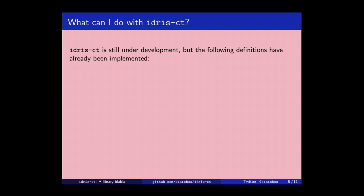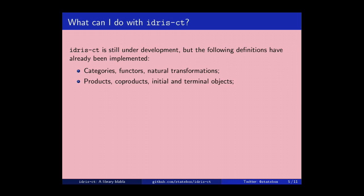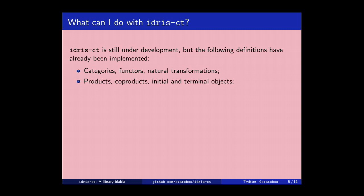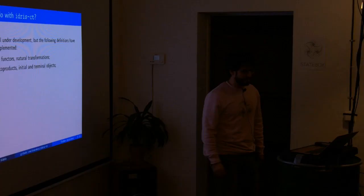So what can you do with this thing? Well, we got quite far. We implemented the basic things. So categories, functions, and natural transformations. We also implemented products, co-products, initial and terminal objects, and if I am not wrong, we have also something about limits going on in the general sense. We implemented monoidal categories and symmetric monoidal categories. For people that don't know what they are, these are basically categories where you can compose arrows sequentially, like in normal categories, but also in parallel.